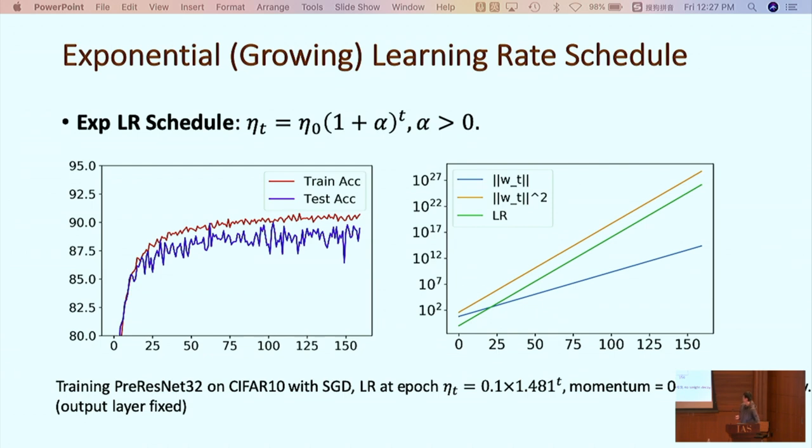The orange line is the normal squared of the weights in some convolutional layer in the neural network, precisely PreResNet 32. Both of them grow exponentially at the same exponent. Meanwhile, the training accuracy and test accuracy increases and then converges. This is exactly the curve you will see with batch normalization and weight decay and with constant learning rate.